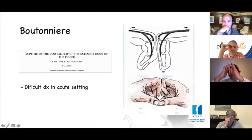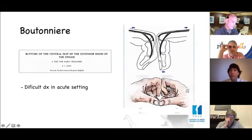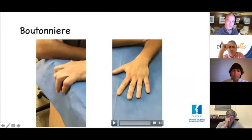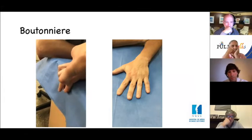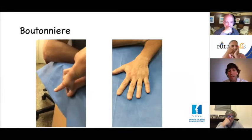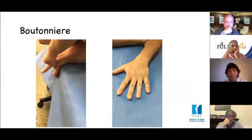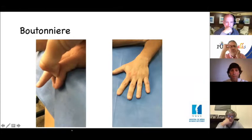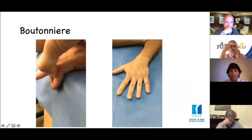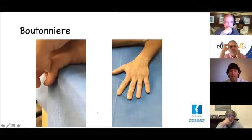Another test is to place two fingers against each other and ask the patient to extend — you will see how the side with the central slip injury extends while the other does not. Here we see an example of the Elson test, where the patient can hyperextend the DIP due to the injury to the central slip.